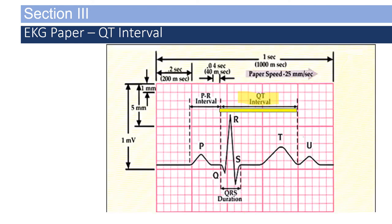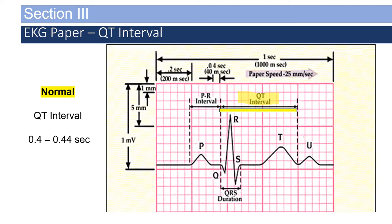The QT interval is represented from the beginning of the QRS complex to the end of the T-wave. A normal QT interval is 0.4 to 0.44 seconds. The P-wave is representative of atrial depolarization, the QRS of ventricular depolarization, and the T-wave of ventricular repolarization. You may wonder why there's no wave representing atrial repolarization — due to the thickness of the ventricular walls, the amplitude of the QRS is large and masks any wave that would represent atrial repolarization.